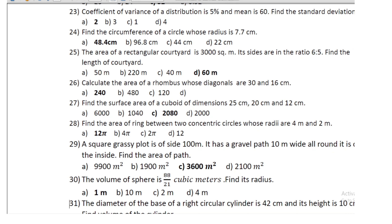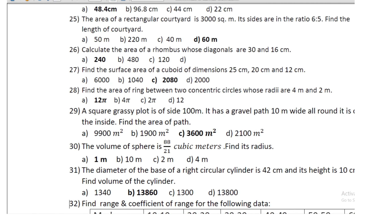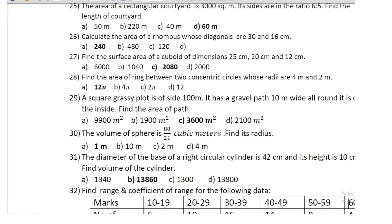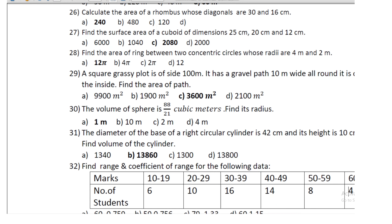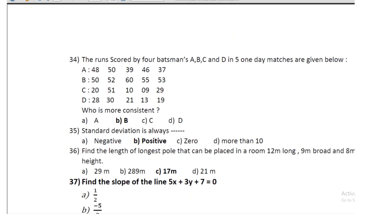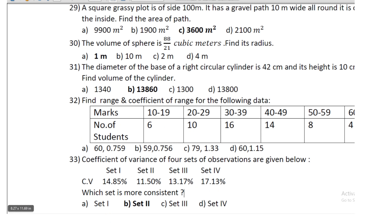The area of the path is 3600 m². Question 28: the volume of a sphere is 88/21 cubic metres; find its radius — the radius is 1 m. Question 29: the diameter of the base of a right circular cylinder is 42 cm and its height is 10 cm; find the volume — volume is 13860 cm³.